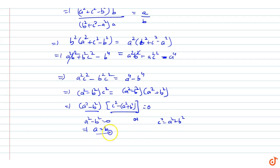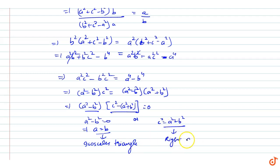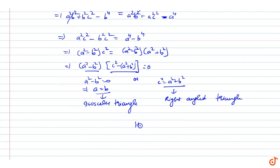So either a² - b² = 0, which means a = b, i.e., it is an isosceles triangle; or c² = a² + b², which means it is a right angle triangle. Therefore, hence proved — this is our solution.